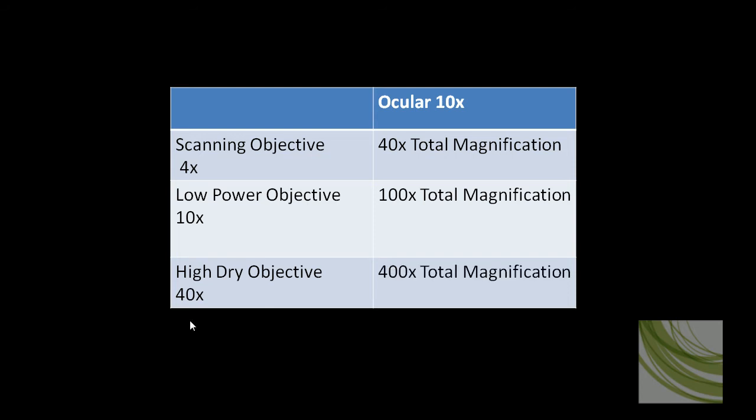And last is the high-dry objective. The high-dry objective magnifies 40x. It has a 40x magnification times 10x, which comes up with 400 times total magnification, meaning when you're looking at something in that slide with the 40x objective, it looks 400 times larger than it really is.